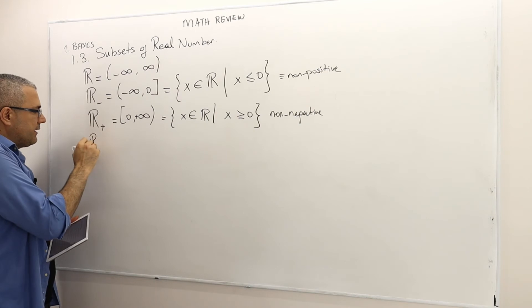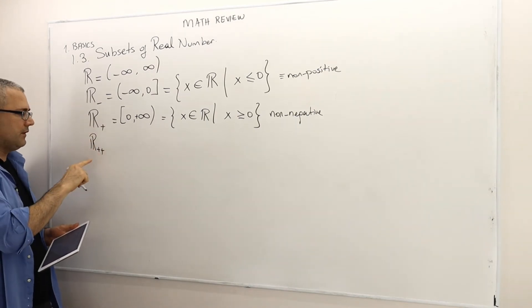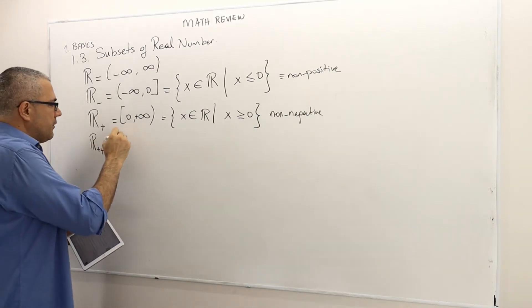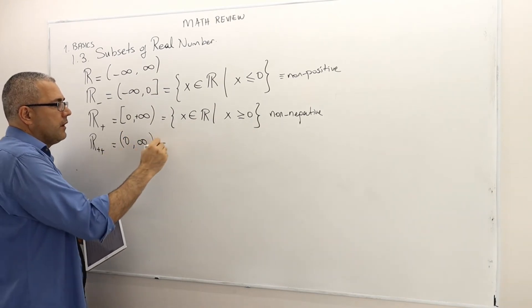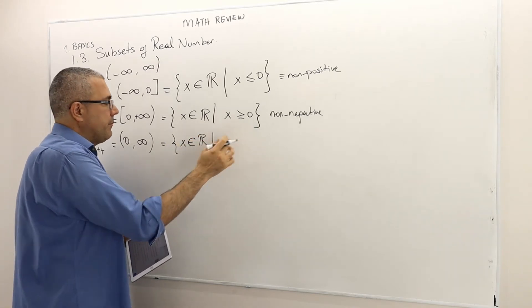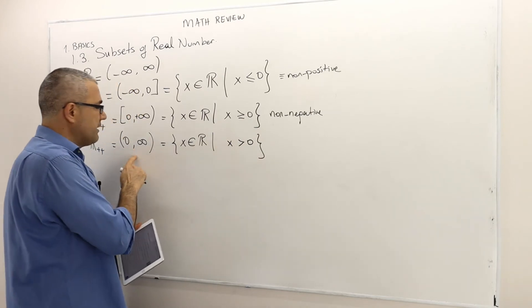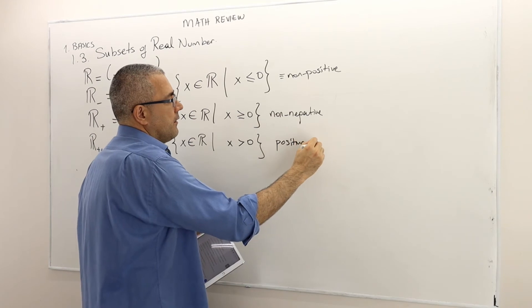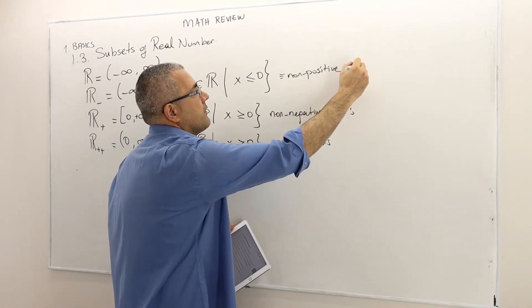We also use R plus plus — that is the set of strictly positive reals. It's the open interval from zero to infinity, written as x is a real number such that x is strictly greater than zero. So zero is not in the set. This is positive reals, as opposed to non-negative reals and non-positive reals.